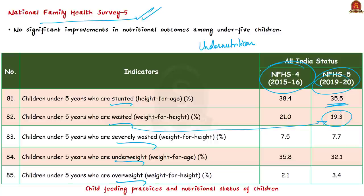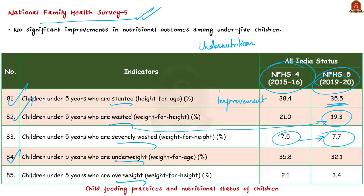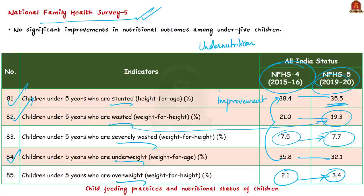The orange shaded indicators have shown some improvement compared to NFHS 4. However, the indicators of severely wasted and overweight show no improvement — in fact their prevalence has increased. This indicates malnutrition is still prevalent among children under five, with other indicators also showing not much improvement. We can say that in 2019-20, India has performed moderately or poorly in the malnutrition indicators.